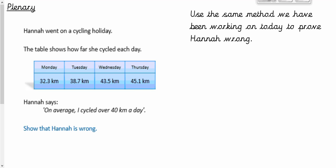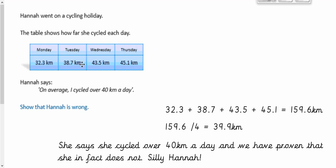And hopefully we're unpaused and we'll go through the method. So what we do is we add up all four of the numbers. So 32.3, 38.7, 43.5, 45.1. And that equals 159.6 kilometres. What we do with that is we look at the total number of bits of data we had. One, two, three, four. Four, so we divide our answer by four, which leaves us with 39.9. Go back to the question. Hannah's saying, on average, I cycled over 40 kilometres a day. It's 39.9 over 40. No, it is not. So it says she cycled over 40 kilometres a day and we've proven that she, in fact, does not. Silly Hannah. Okay. So we have proved that Hannah was wrong.